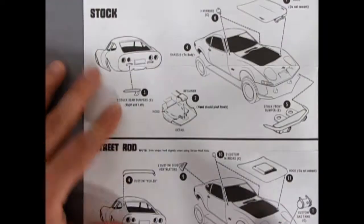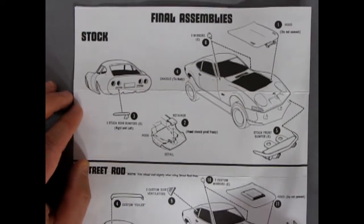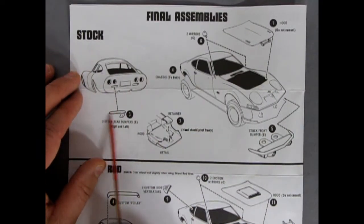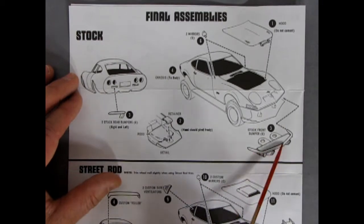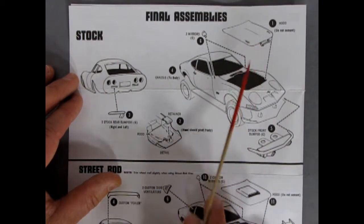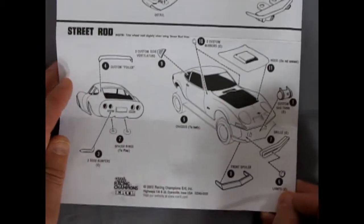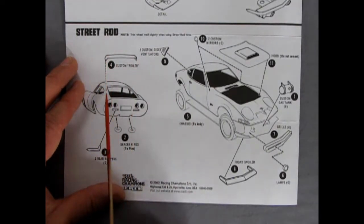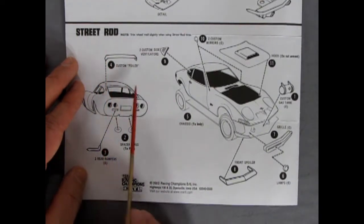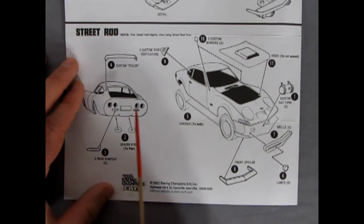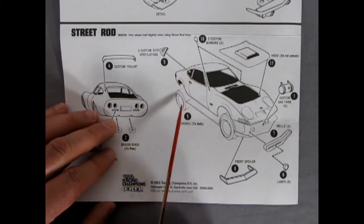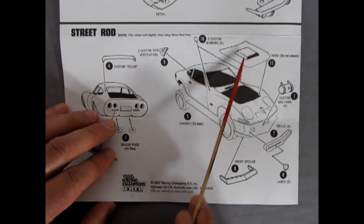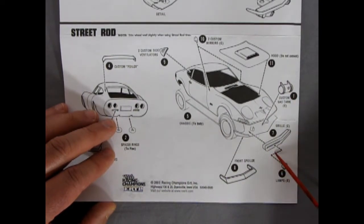And then finally you've got your stock final assemblies right there. So then we have our body with the Corvette style rear bumperettes going on there. And then there is a retainer for the hood because it had that hinge in the front. The stock bumpers have the little pins sort of like a promotional style. There's that hood going in there and then your side mirrors and it all goes together nice. And then when you get your street rod you have this custom foiler which goes up over top of the rear window. The rear bumpers which are a little bit different than the stock ones. Add in the spacer rings to the back because it's got different size wheels. Custom vents go in the rear windows. Then your mirrors. Then you've got that hood with the bulge in it. The custom gas tank. There's a grill going in here and a front spoiler. So a really cool little Opel GT.